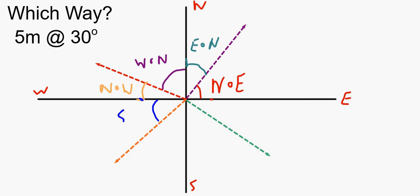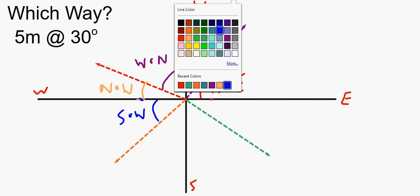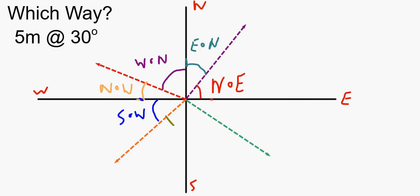What about this angle right here? Well, again I'm touching the westerly direction and I have to turn to the south, so this is south of west. What about this direction here? Well, this time I'm facing in the southerly direction and I have to turn to the west, so this is west of south.